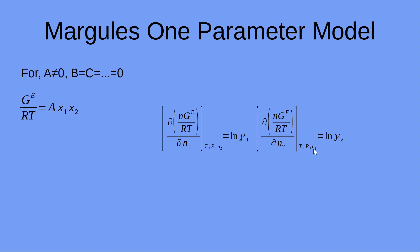If we do this mathematical operation for GE/RT equals A times X1 times X2, we will get ln gamma 1 as A times X2 squared and ln gamma 2 as A times X1 squared.